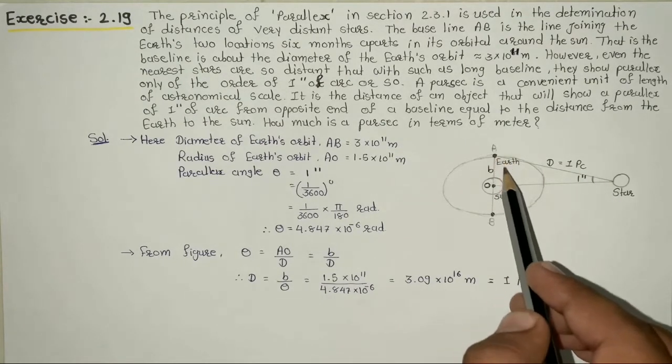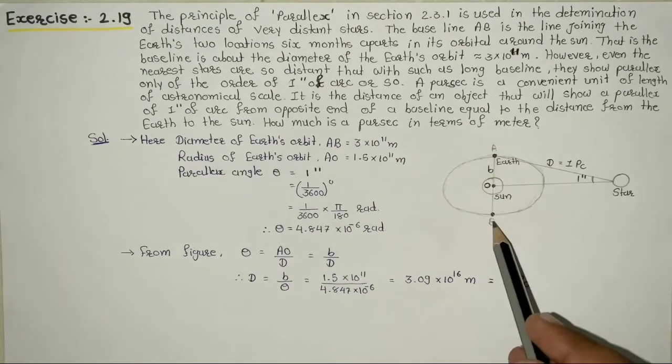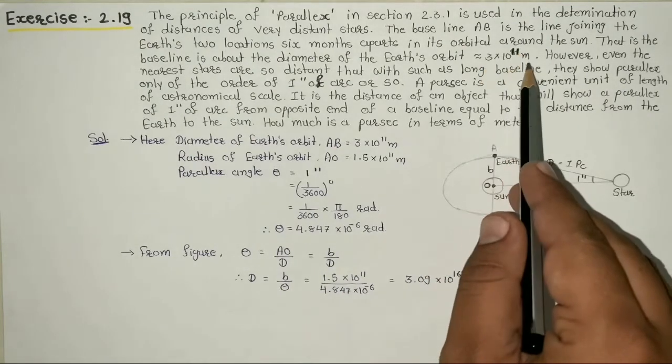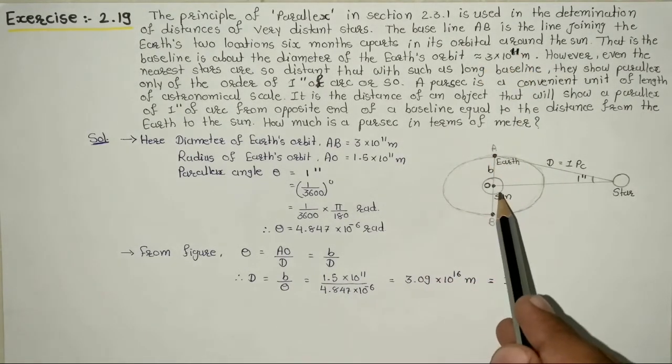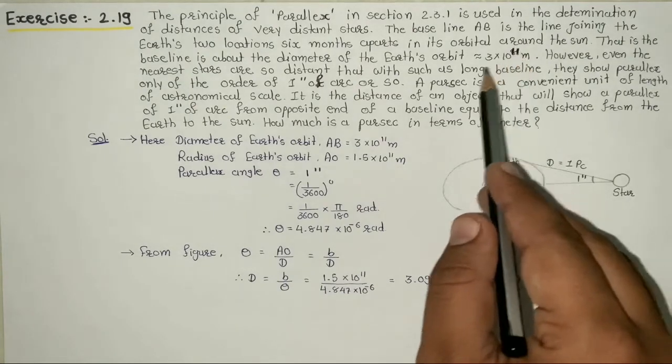Here, baseline AO will be what? AB is given as 3 times 10 to the power 11 meters, so AO will be 3 times 10 to the power 11 divided by 2. That means 1.5 times 10 to the power 11 meters.